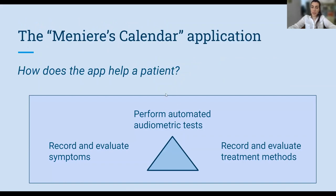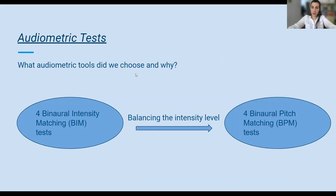So how does the app help a patient? First of all, it replaces the classic paper diary — the patient can record and evaluate symptoms and treatment methods. The other usage of the Meniere's calendar application is the performance of automated audiometric tests. The task was to find self-tested methods that are reliable, and after extensive research we ended up with a series of binaural tests: four of intensity matching followed by four of pitch matching. The main idea is to overcome problems like device calibration by measuring the hearing ability of the impaired ear compared to the unaffected ear, as Meniere's disease is mostly unilateral.